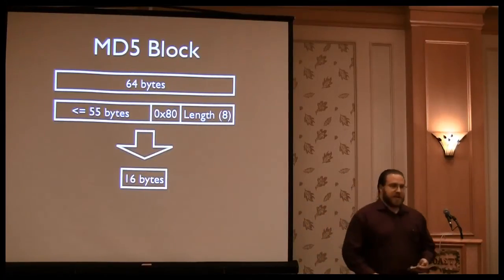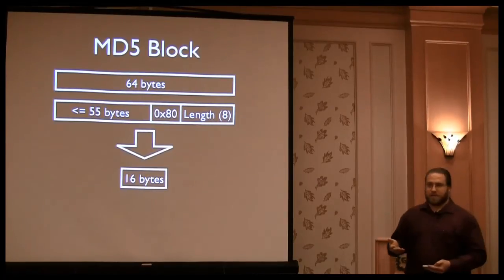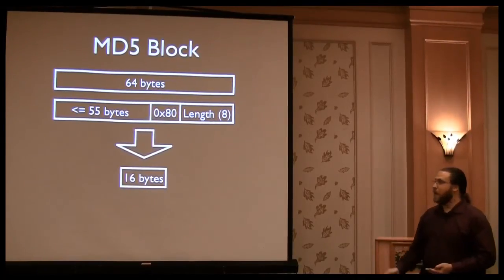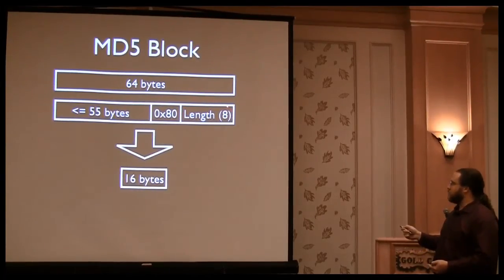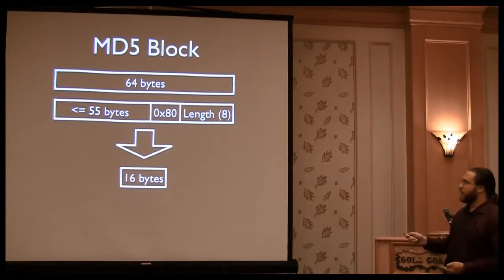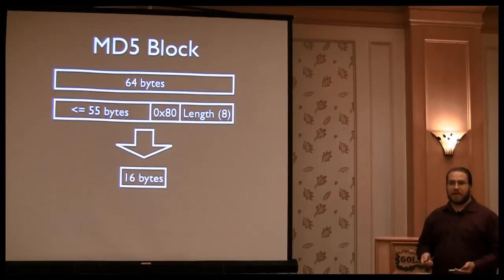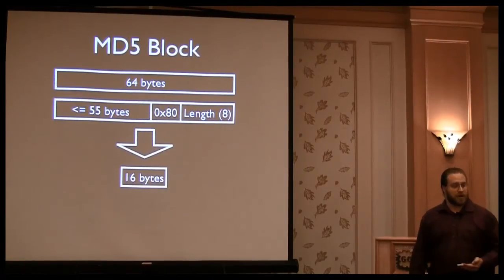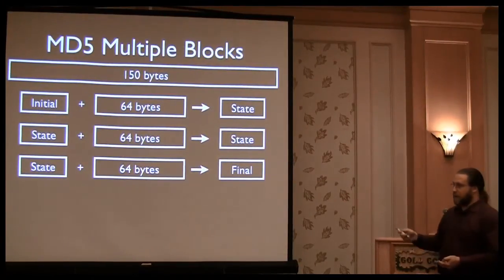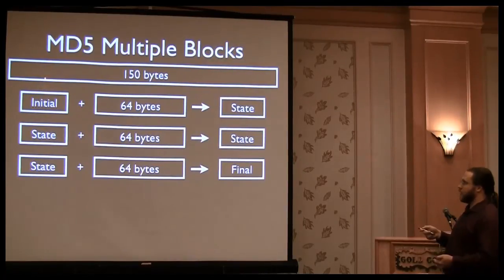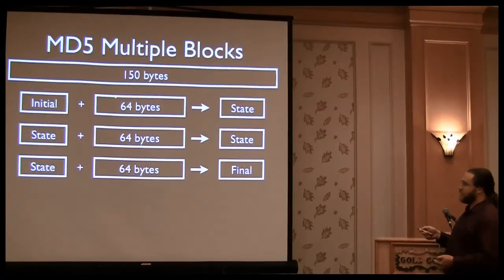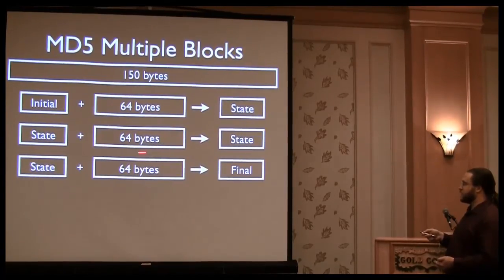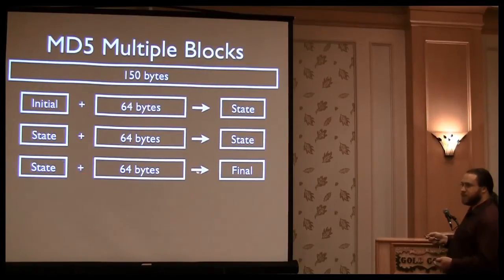One thing that's very important to understand with MD5, SHA-1, and other algorithms is that they work in blocks — they take a block, typically 64 bytes of data, add some padding, usually encode the length, and then process it. If you've ever wondered why there's a 55-character limit in most password tracking tools, this is why — that's as many bytes as you can fit in one block of an MD5 or SHA-1 operation. When you have more data, the initial state is loaded, the first 64 bytes are processed, you get the state at the end, then you process the next 64 bytes, and so on until you get your final hash.